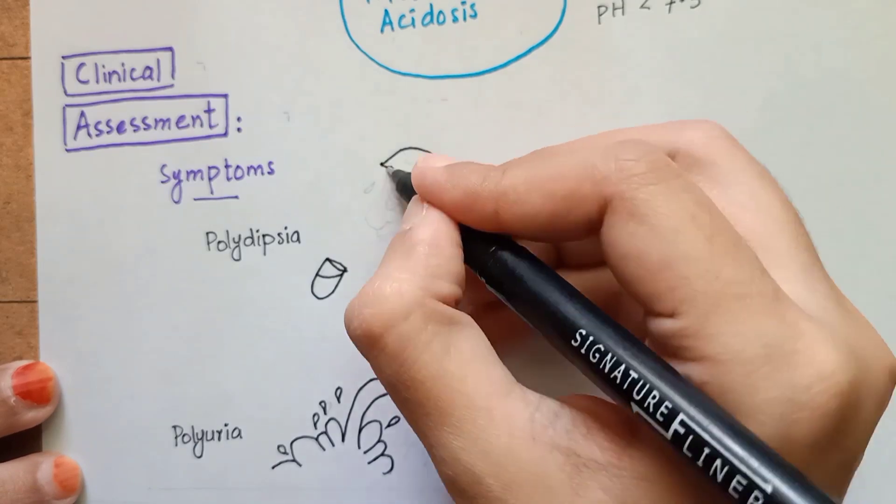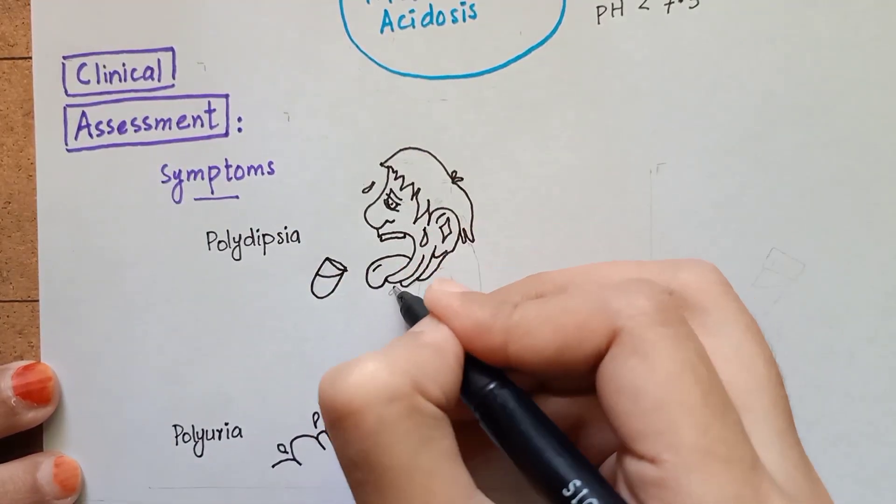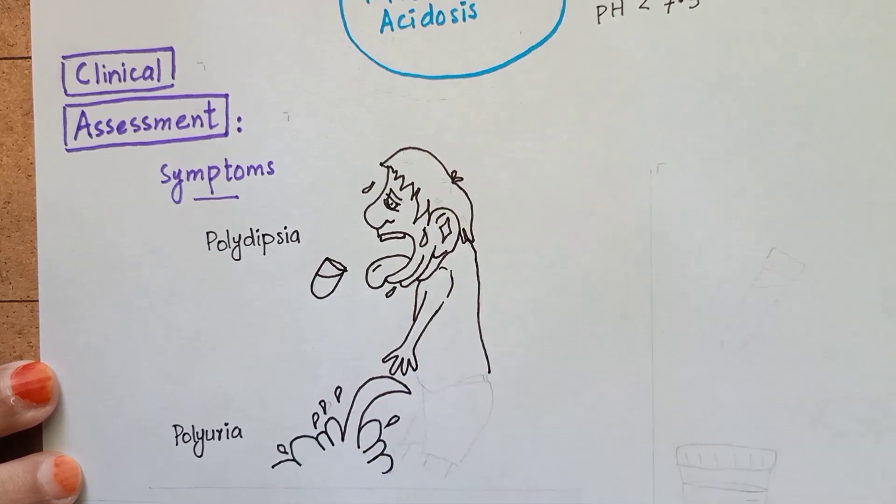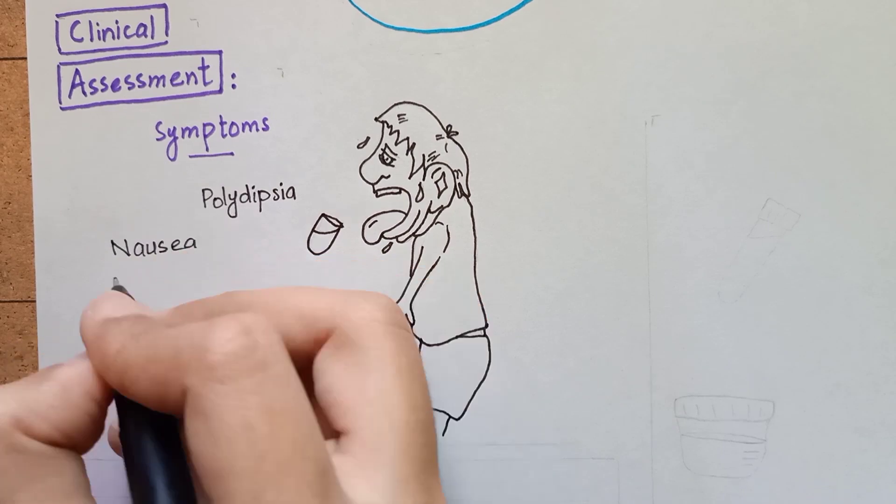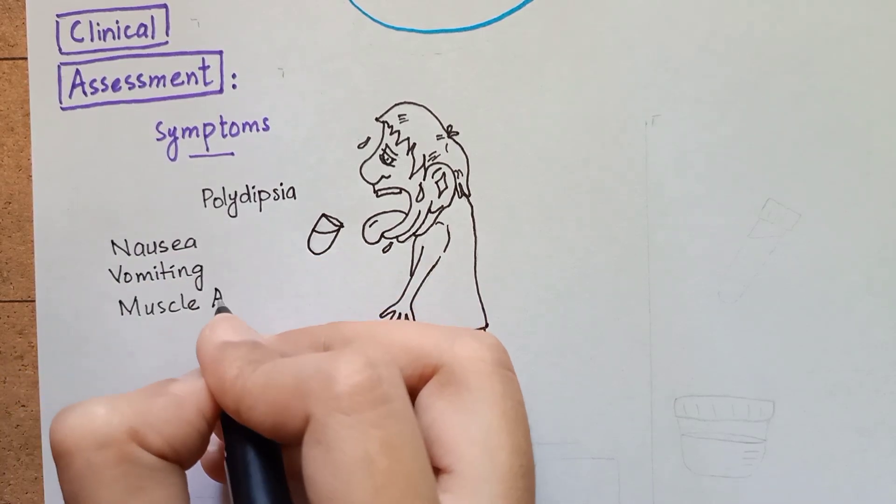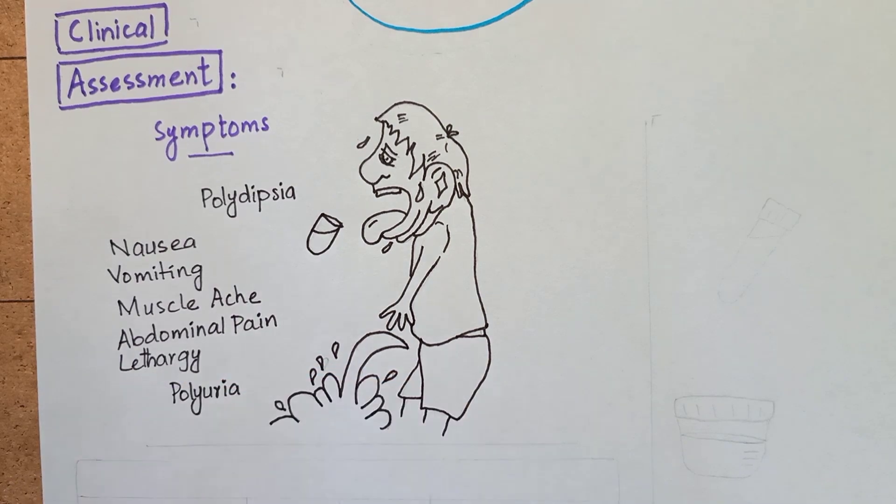If untreated, severe symptoms appear quickly such as nausea, vomiting, abdominal pain, muscle aches and stiffness, lethargy, and dry skin and mouth.